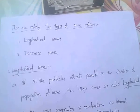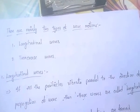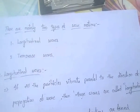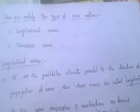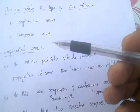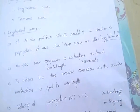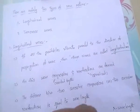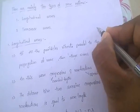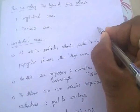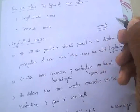Next, wave motions. There are mainly two types of wave motions: first, longitudinal waves, and second, transverse waves. In the case of longitudinal waves, all the particles vibrate parallel to the direction of propagation of the wave.